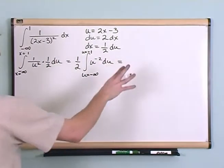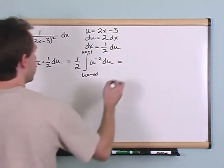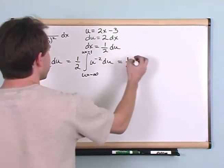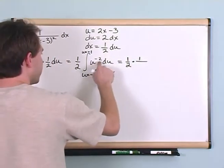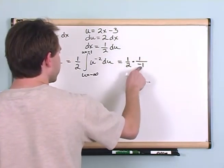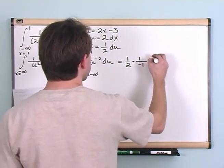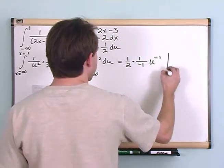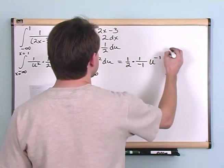This should all be familiar from our other section on definite integrals. So you have one-half, and to pull this integration off it's going to be one over exponent plus one, which is negative one. Negative two plus one is positive one times u to the negative one, just like this, evaluated from minus infinity to minus one.